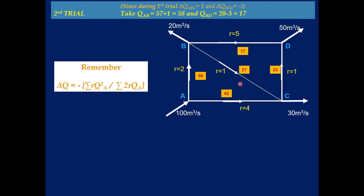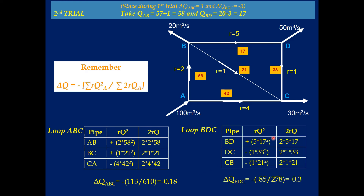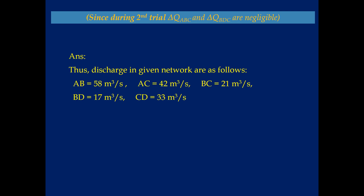For the second trial, we again calculate ΔQ for loops ABC and BDC using the same formula — computing RQ² and 2RQ for each pipe in each loop. After the second trial, ΔQ for loop ABC is −0.18 and ΔQ for loop BDC is −0.3. These values are negligible, so we stop the iteration here. The iterations continue until ΔQ becomes negligible.